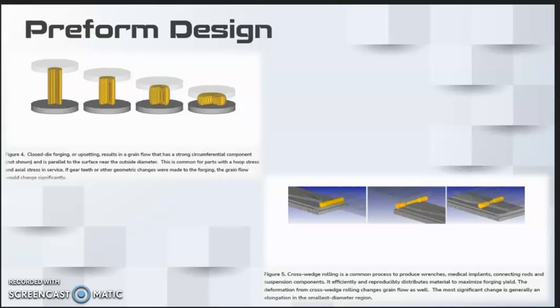The larger diameter regions where additional metal is being gathered generally have a radial component to the grain flow prior to final forging operations. Depending on the geometry of the initial bar, the preform, and the final forged shape, the amount of grain flow changes in these end regions can vary from very little to a significant amount.